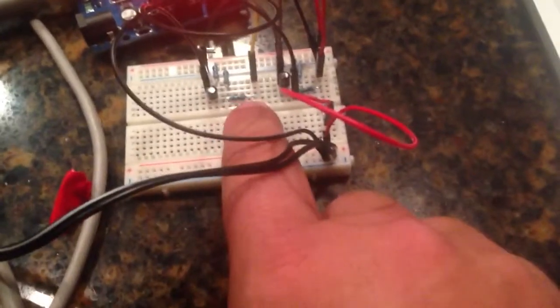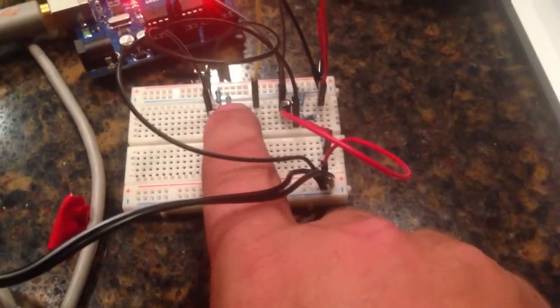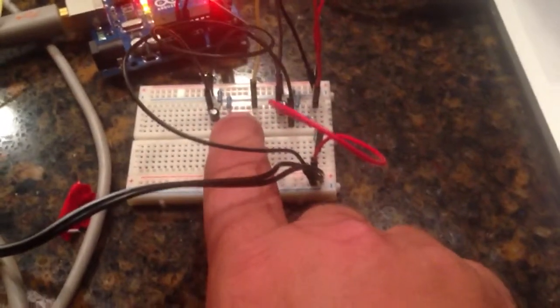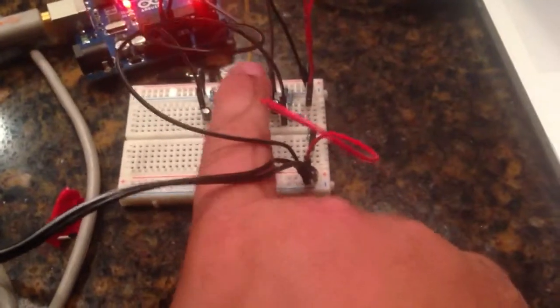On the CT sensor side, we've got a positive lead and a negative lead. Basically, it's a burden, this is another burden, so it converts the AC current from the CT sensor to voltage so we can read it.